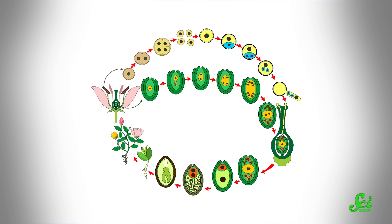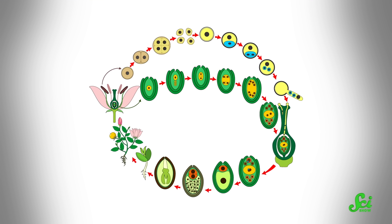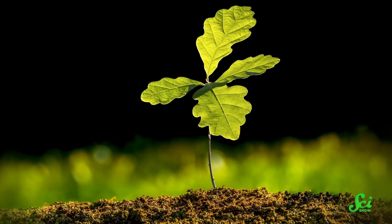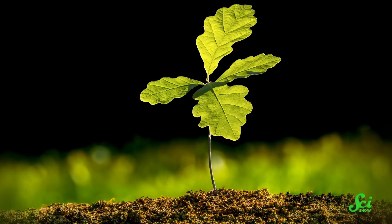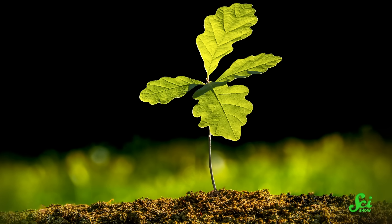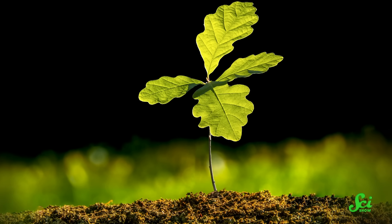It produces the pollen and egg cells the plant needs to continue the alternation of generations. That's why our oak seedling from the beginning is the grandchild of the big oak tree — its immediate parent lived and died unnoticed in the oak flowers. But why, though? What advantage does this give to plants?